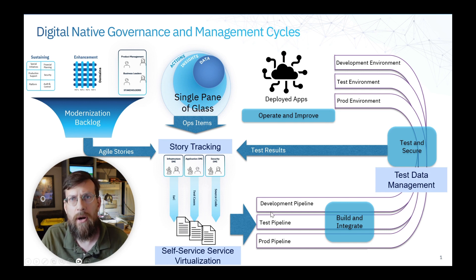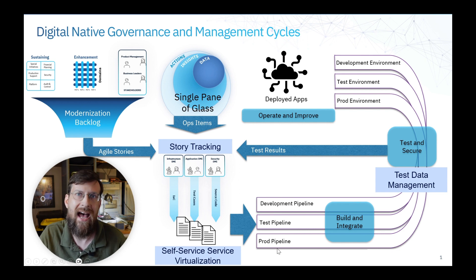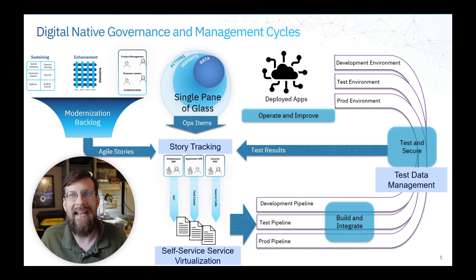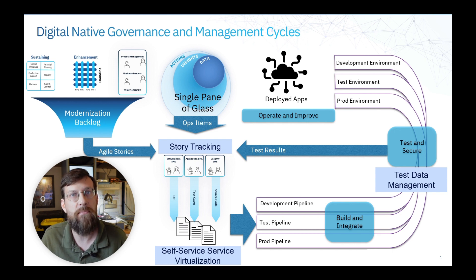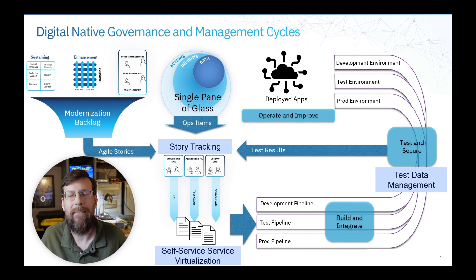Then you enter a pipeline. I've highlighted three pipelines: development, test, and prod. But you would also have stage, UAT, and all these other pipelines, depending. The first thing you would do is build and integrate — tools like Jenkins, for instance. That's what to think of there.